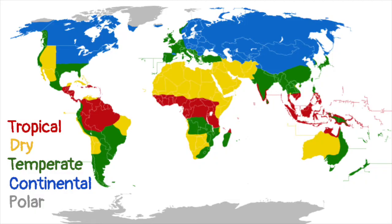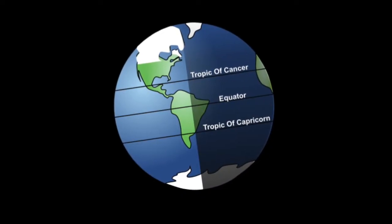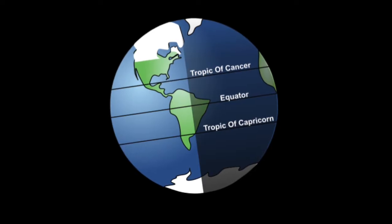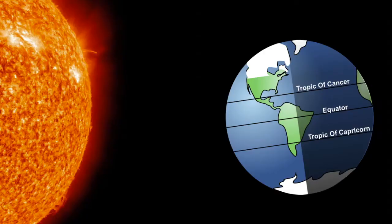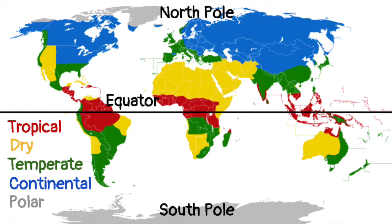Earth's north and south poles have polar climates. Several factors affect the climate of a region. Latitude, or distance from the equator, plays a big role in determining climate. The equator receives more direct sunlight while the poles get slanted, indirect sunlight. Because of this, land near the equator is warmer than land closer to the poles.